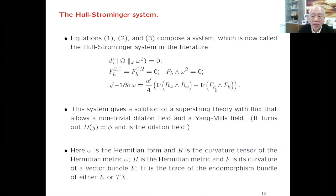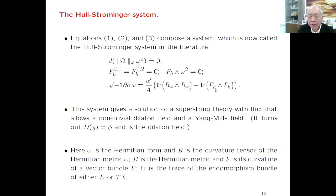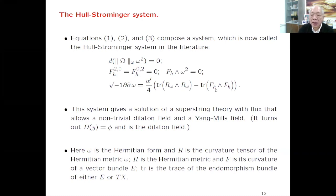These three equations form a coupled system: the first is for the metric on the base manifold to be balanced, the second is the Hermitian-Yang-Mills equation for the bundle, and the third—the anomaly equation—couples them together, connecting the metric on the base with the metric on the bundle. This is a solution of superstring theory with flux that allows a non-trivial dilaton field and Yang-Mills field. Andy Strominger told me about this in 1985, and I was always puzzled about how to prove the existence of such solutions.